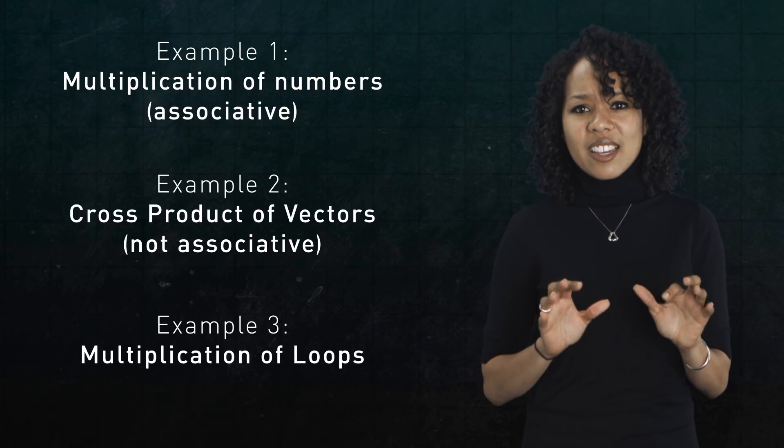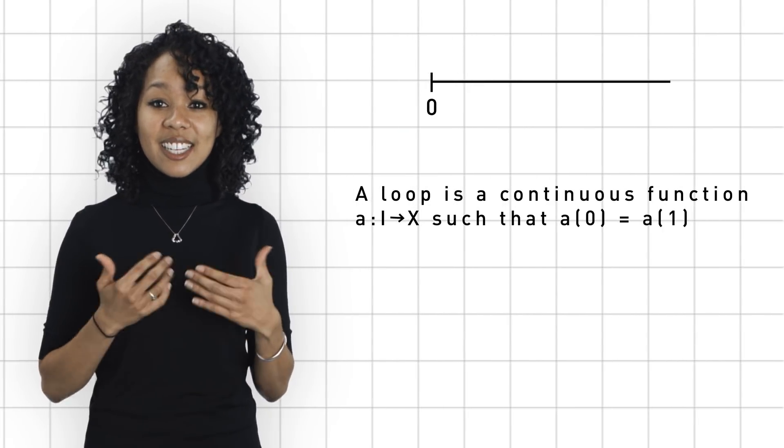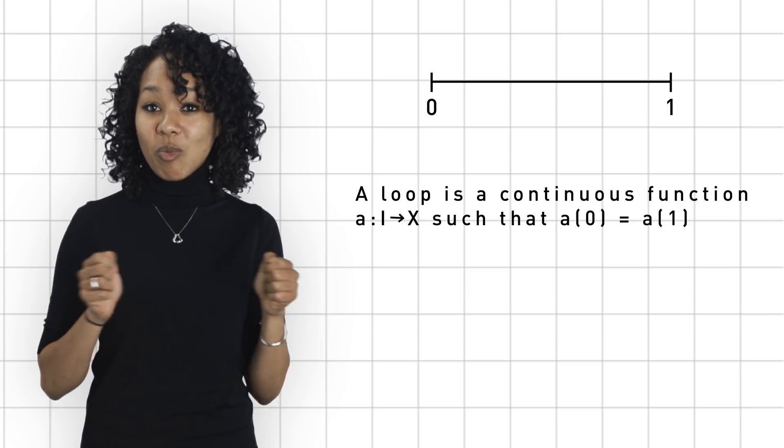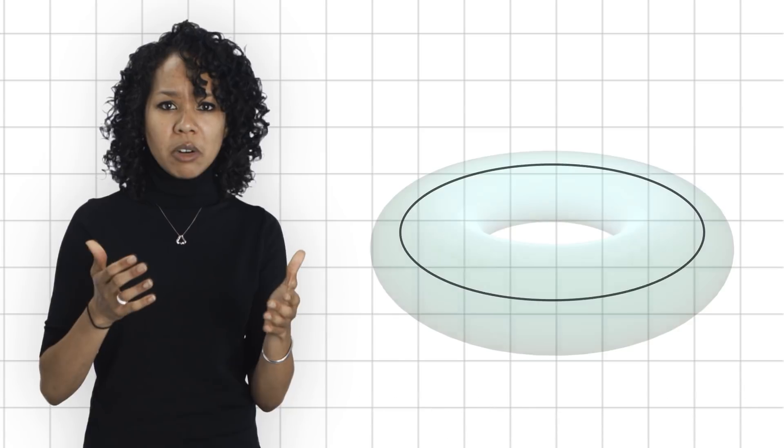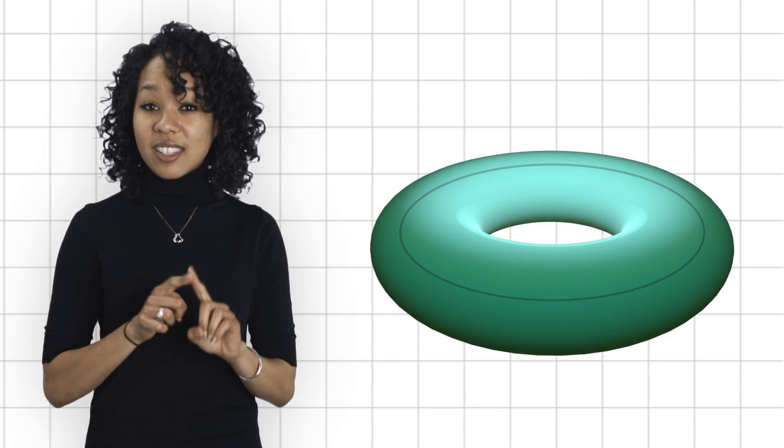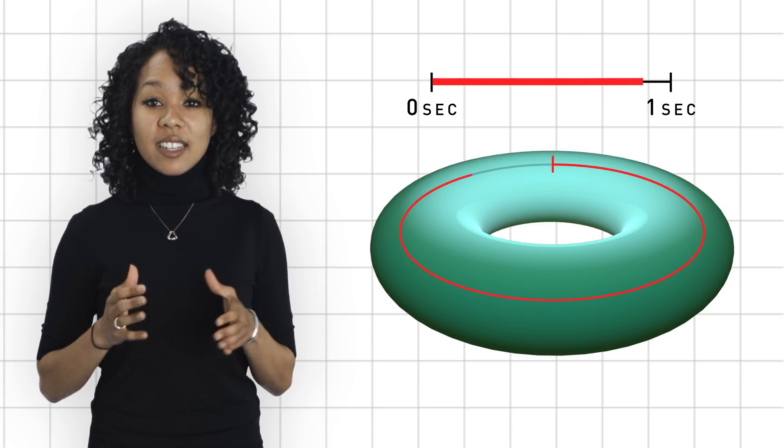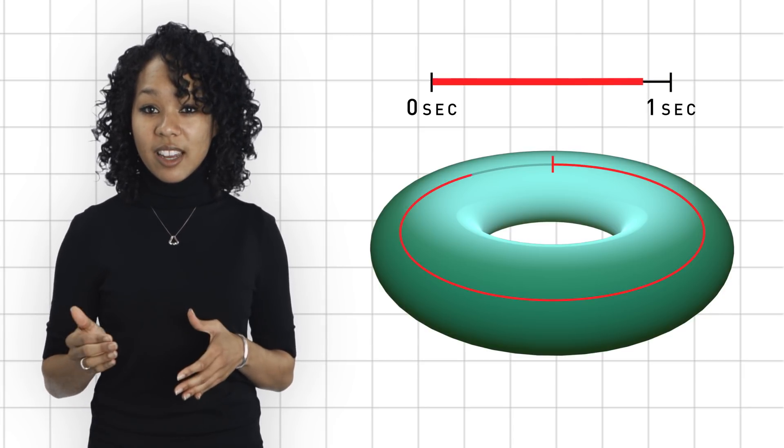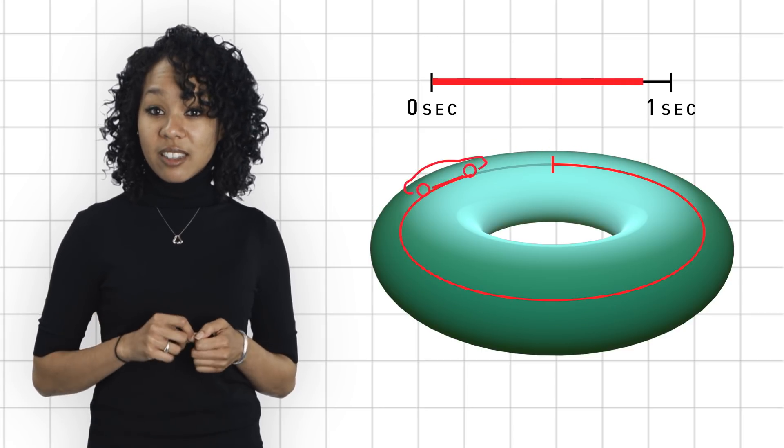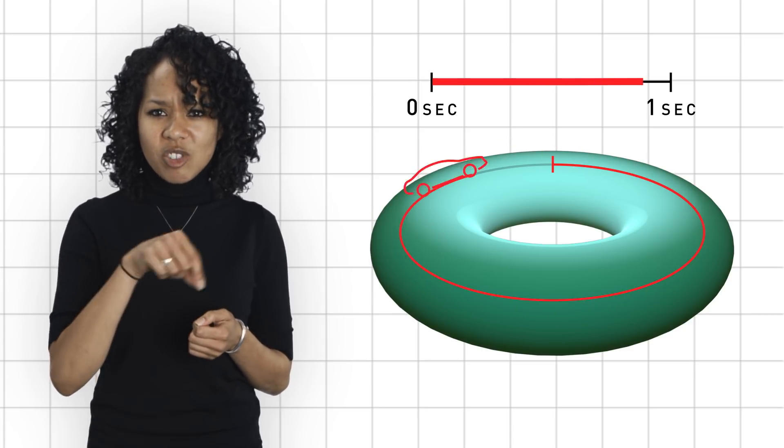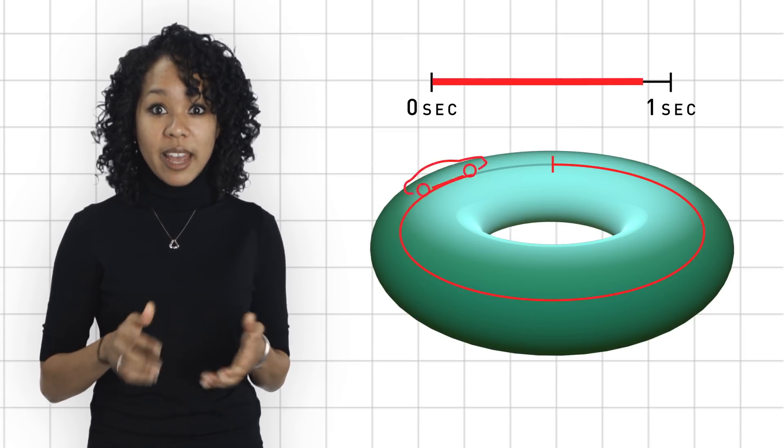Now, a loop is just what you think it is. It's a loop. Mathematically, we say it's a continuous function from the interval of length one into a topological space X, some shape like a donut, that sends zero and one to the same point. Here's one way to visualize it. You can think of this interval as a stopwatch. And as time goes from zero seconds to one second, you can imagine a car tracing out some path in the space. At zero seconds, the car starts at some point, then it travels around the space somewhere, and at one second, it goes back to where it started. That's a loop.